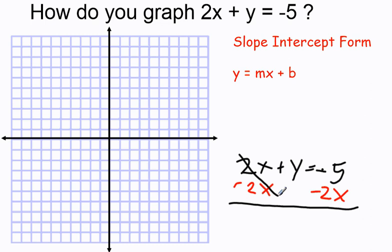And those will cancel, giving me y is equal to negative 5 minus 2x. But to write it in that form, I'm just going to write is equal to negative 2x minus 5.